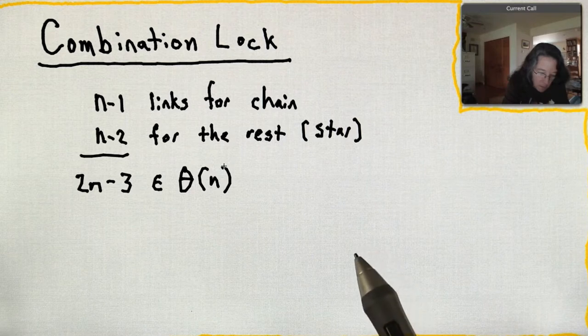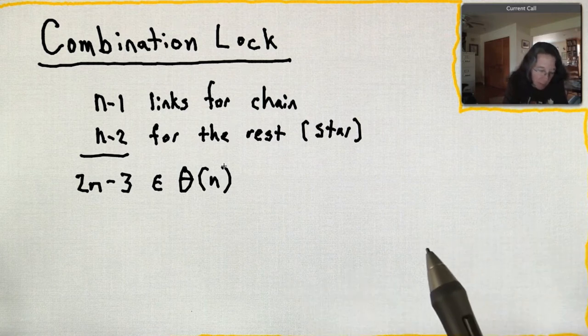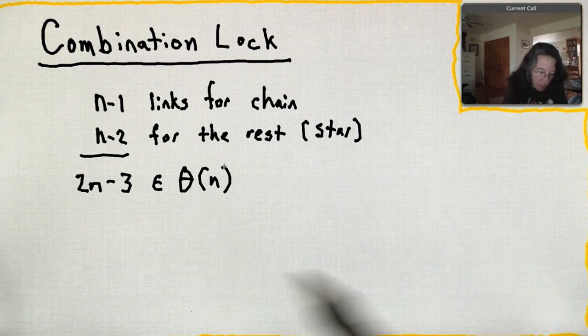So each edge adds two nodes, and so it's going to continue to grow linearly. And then you think about what you have if you have one node.